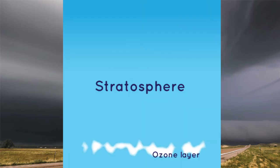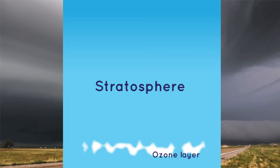Next is the stratosphere — in Greek, the 'layered sphere.' It has an average height of about 20 kilometers in the tropics, 10 kilometers in the mid-latitudes, and 7 kilometers in the polar regions. It is characterized by an increase in temperature with height due to absorption of ultraviolet radiation by ozone. The average temperature within the stratosphere is around minus 32.5°F.